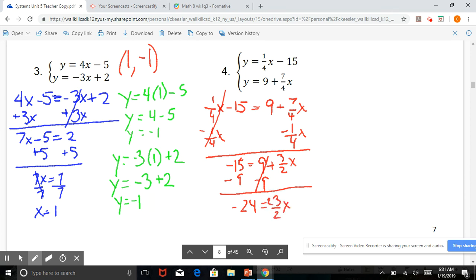We get negative 24 equals 3 halves x. Multiply by the reciprocal. And x equals negative 24 divided by 3, which is negative 8, times 2, which is negative 16.